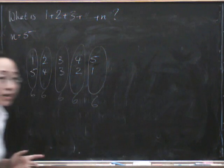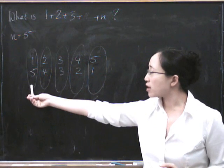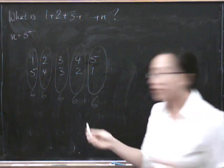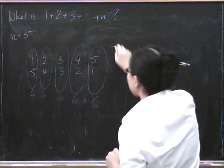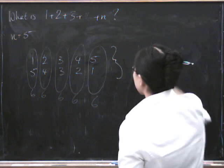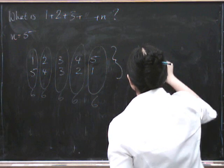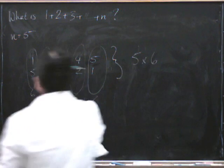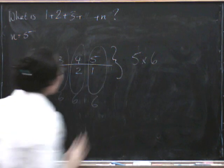Now, how many 6's have we got? Well, because we've got 1 for every place where we originally wrote a number, we've got 5 of them. So if we add up both these rows of numbers, we get 5 lots of 6. But is that the answer we want? Well it isn't.